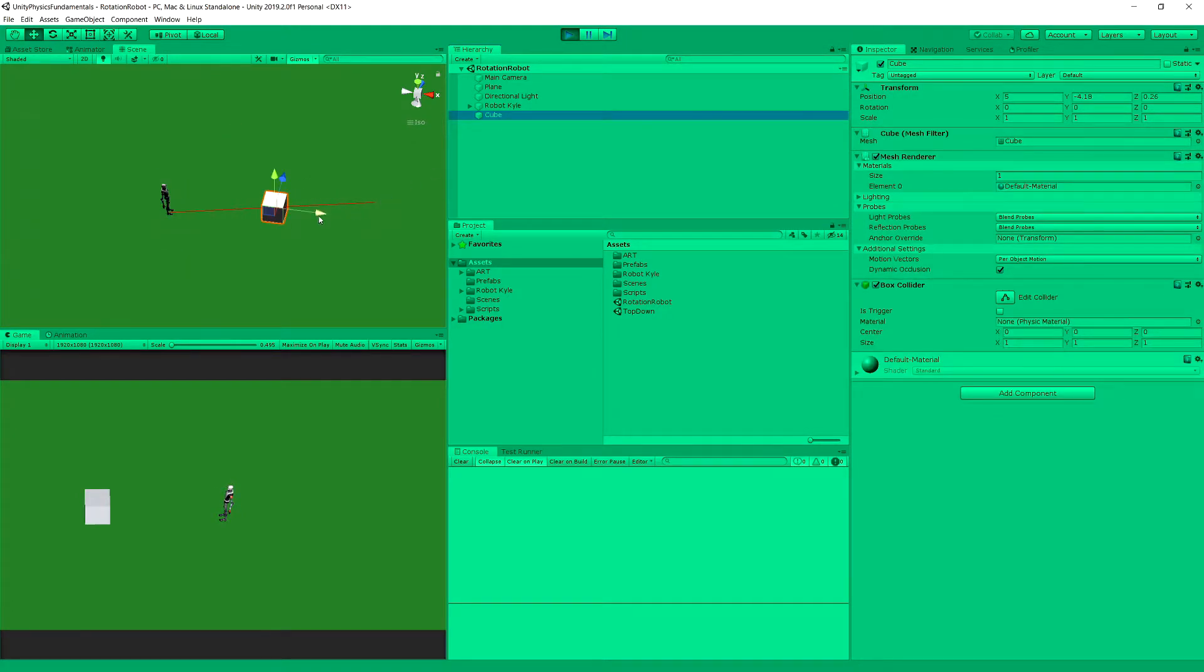And the robot is rotating towards the cube. And we can move the cube and the robot rotates. But because we are using the LookRotation, it also rotates around the x-axis and z-axis, depending on how we place our cube.